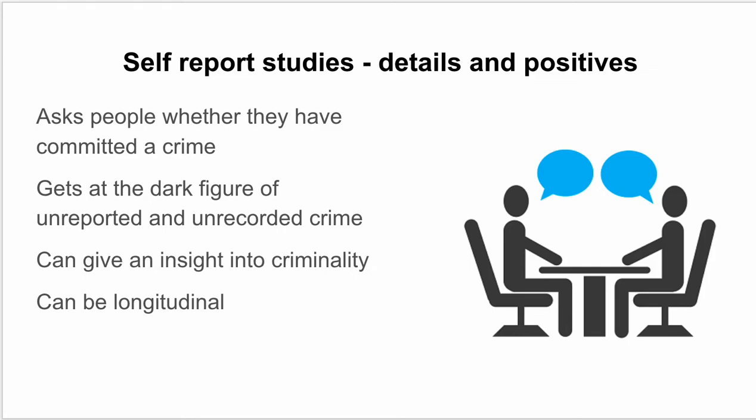Next, self-report studies ask people whether they've committed a crime, either through an interview or questionnaire. Like victim surveys, they help get at the dark figure of unreported and unrecorded crime — crimes the police haven't found out about. They can give insight into criminality, allowing researchers to ask why someone committed a crime and what types of crimes they've committed. They can also be conducted longitudinally, speaking to people over a number of years to track how a criminal career develops.